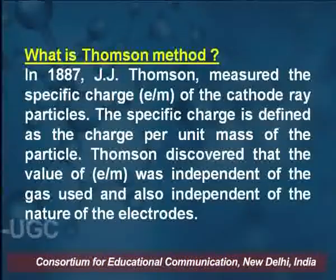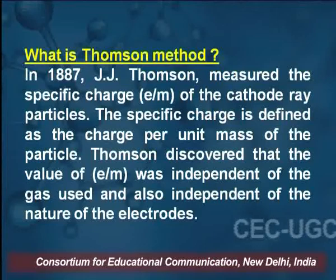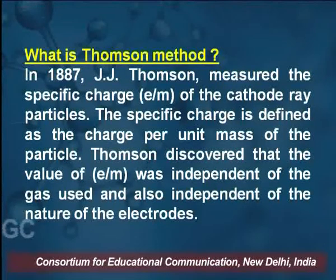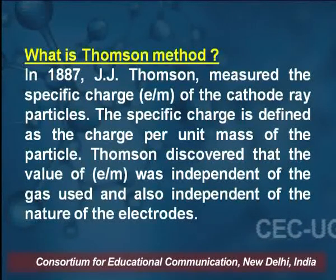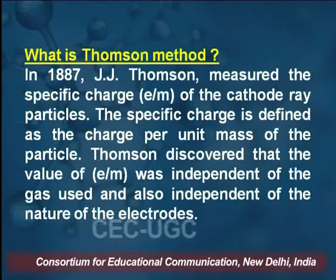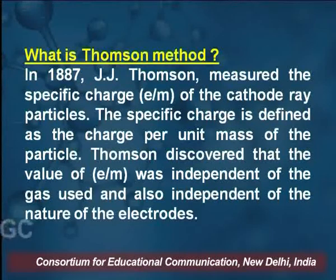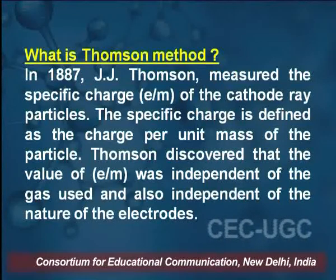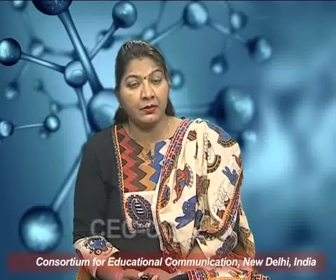What is the Thomson method? In 1897, J.J. Thomson measured the specific charge e/m. Specific charge is the charge per unit mass of the particle. Thomson discovered the specific charge e/m and found that its value was independent of the nature of the electrode and independent of the nature of the gas supplied. The experiment is done in vacuum.